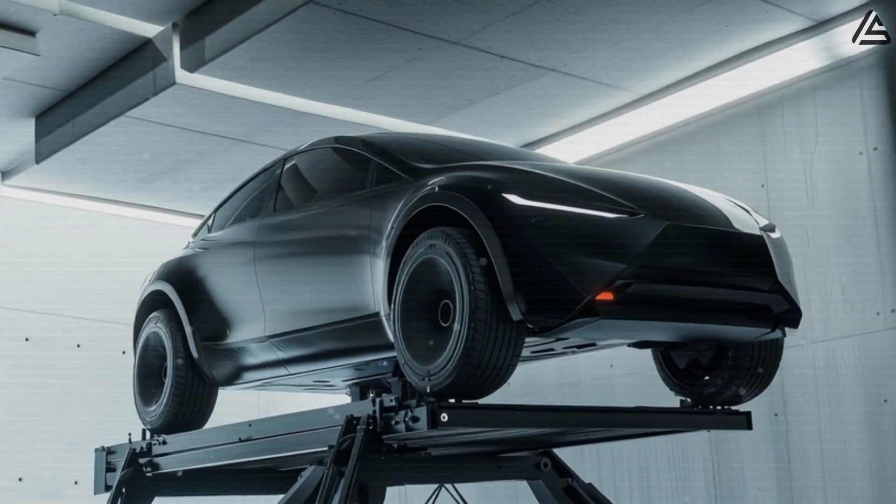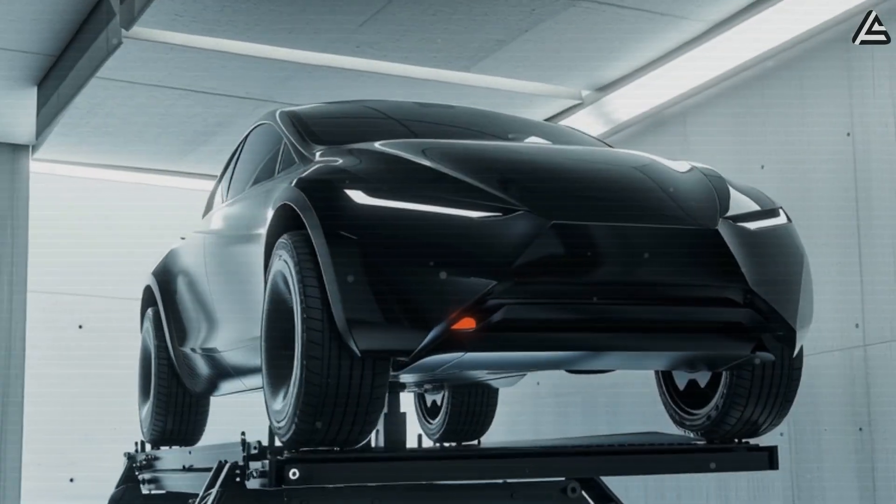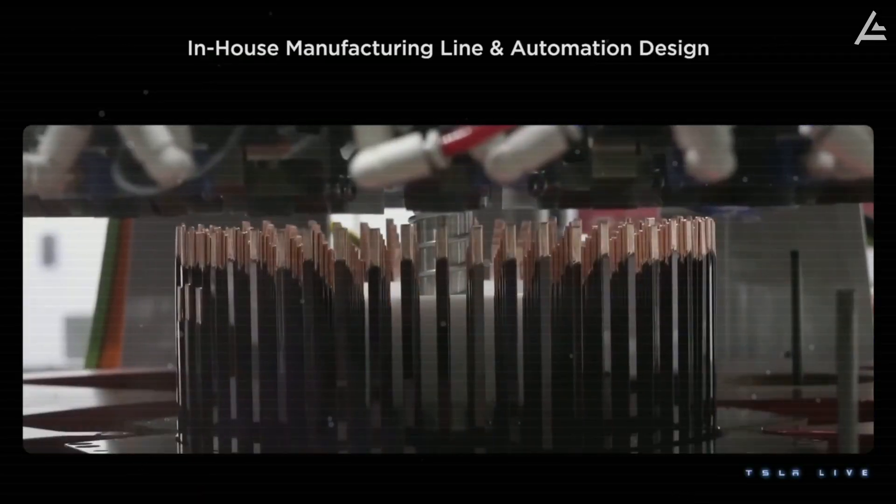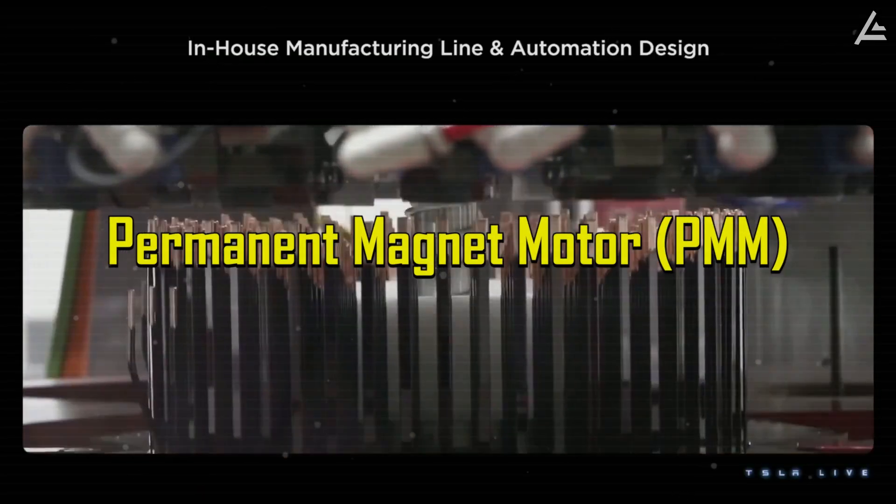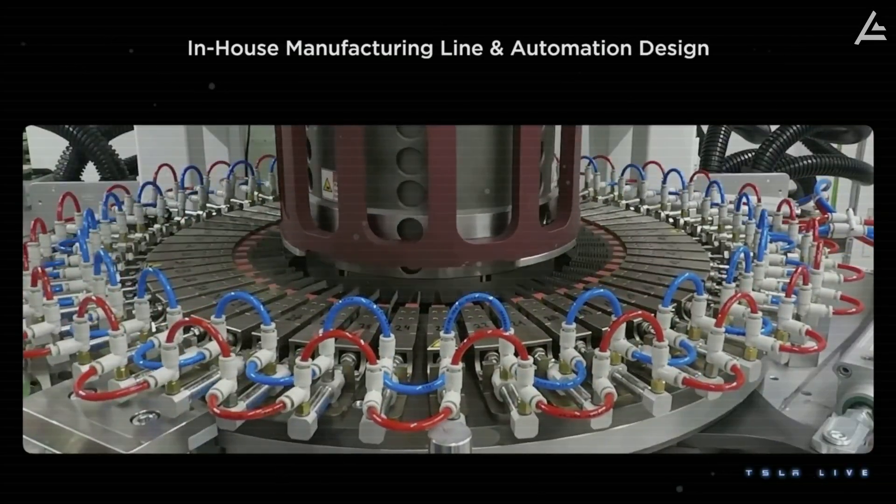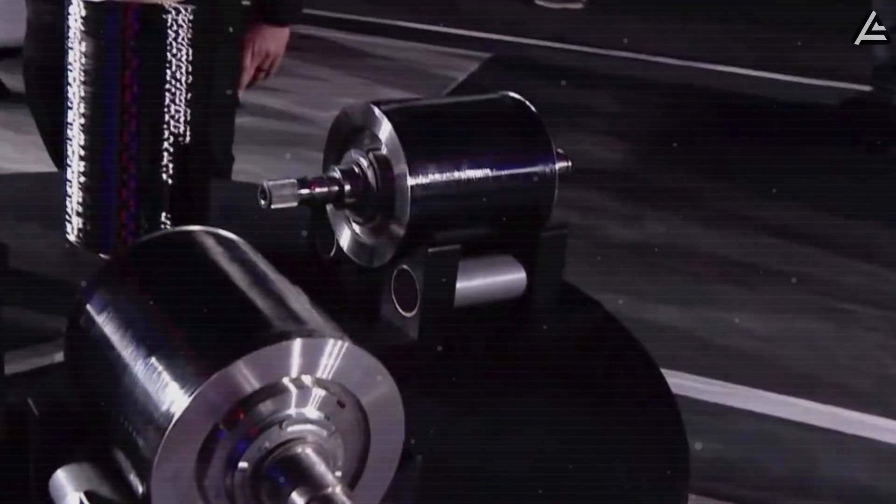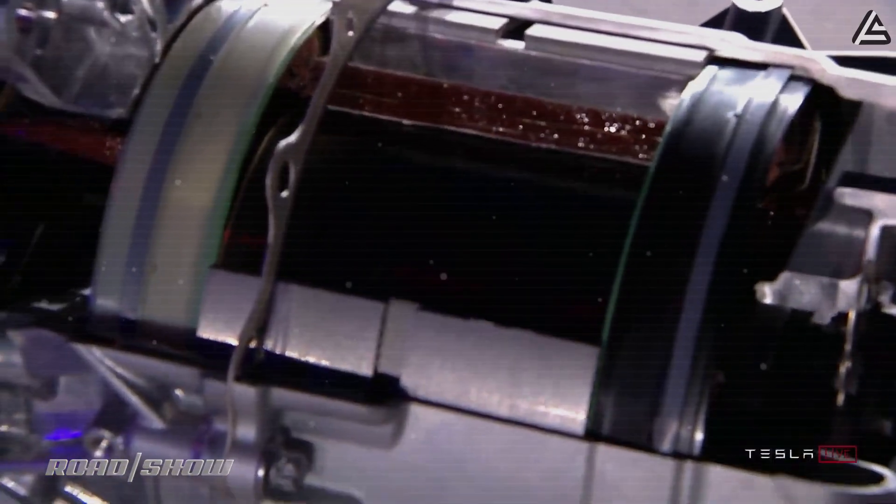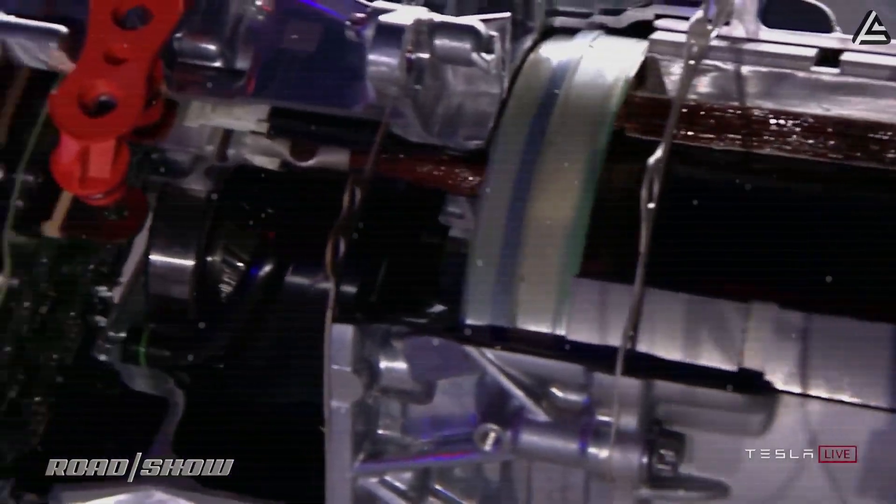Hidden inside the upcoming 2026 Tesla Model 2 is a motor that could redefine electric vehicle performance: the carbon-wrapped rotor. At its heart, this system is still a permanent magnet motor, but with one radical change. Tesla has replaced the traditional metal containment sleeve with an ultra-light, ultra-strong carbon fiber composite shell that encases the rotor.